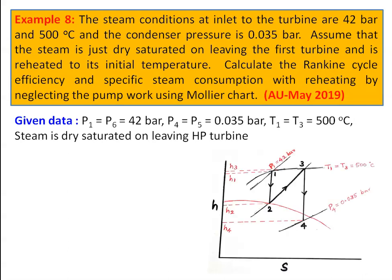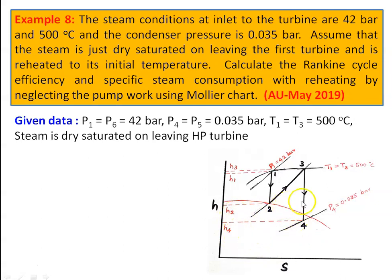This is the enthalpy-entropy diagram — the Mollier chart — a graphical representation. When you spread your Mollier chart, you may find a dark line — the red color line drawn here. That dark black line is called the saturation line. Below the saturation line we have wet steam, on the saturation line the properties of dry saturated steam, and above the saturation line superheated steam.